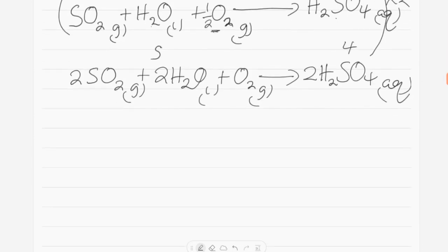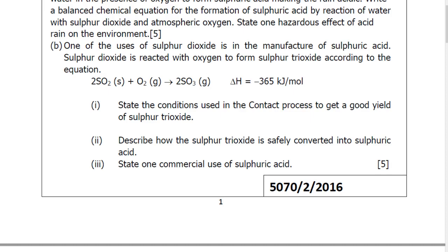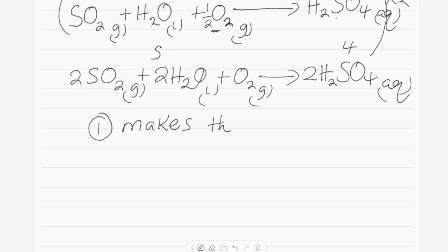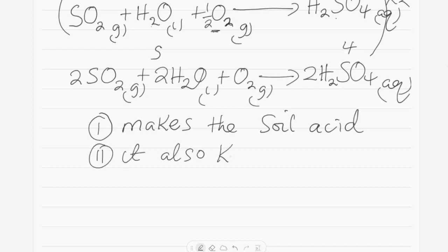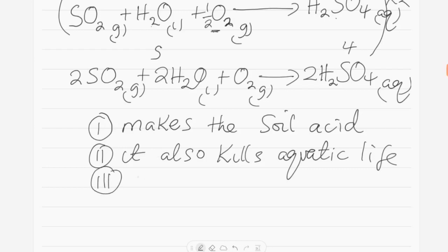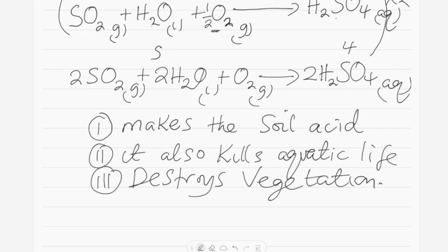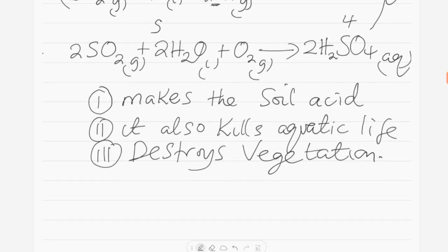The second part of the question asks for the hazardous effects of acid rain. Number one, it makes the soil acidic, so the pH of the soil is going to reduce. Number two, it also kills aquatic life — life that depends on water, aquatic or marine life. Number three, it also destroys vegetation.